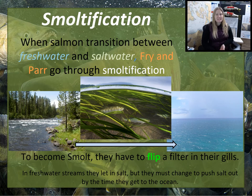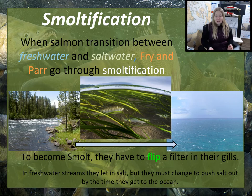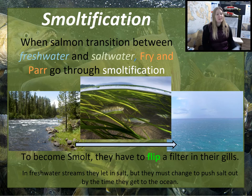Smolts have to adapt to saltwater after living in freshwater through a process called smoltification. The biggest part of this process is that they have to flip a filter in their gills — in freshwater they let water in, but they have to change that to push saltwater out by the time they reach the ocean. Living in the estuary gives them time to process this change since it's a mix of freshwater and saltwater. It's really difficult and it's amazing that they're able to do this.